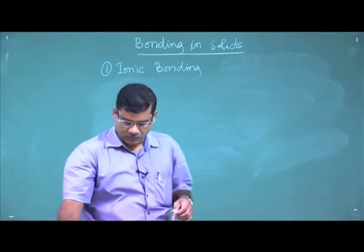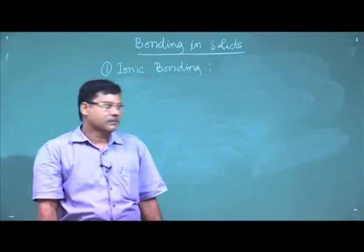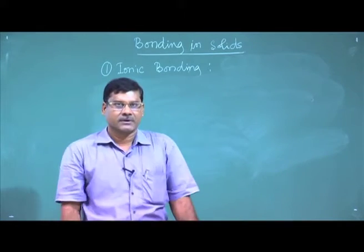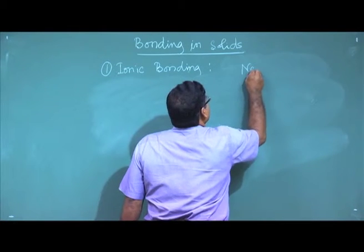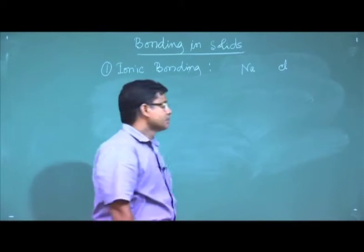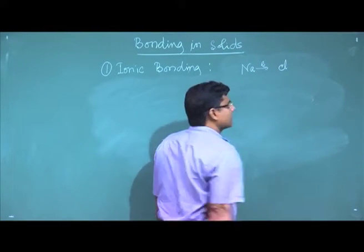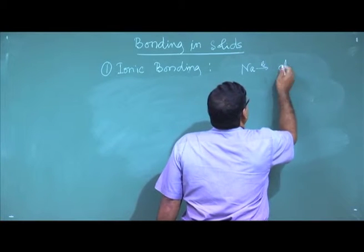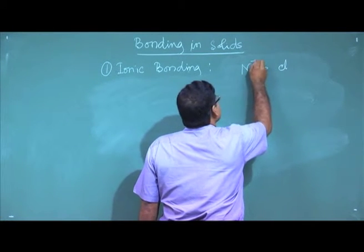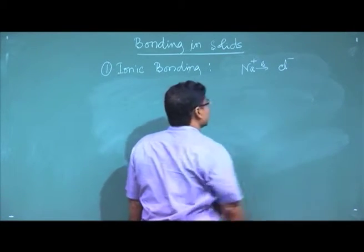Ionic bonding: what is ionic bonding? Ionic bonding is basically a bond between two ions — one is a positive ion and another is a negative ion. Like sodium chloride as a classic example: when a sodium atom and a chlorine atom come closer, sodium leaves one electron and gives it to chlorine. So sodium loses one electron and chlorine gains one electron, making sodium a positive ion and chlorine a negative ion.